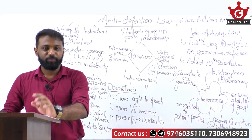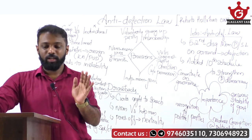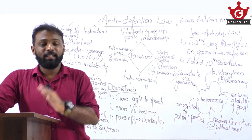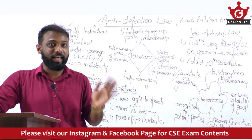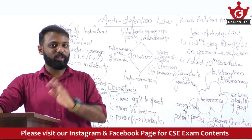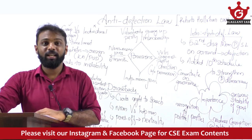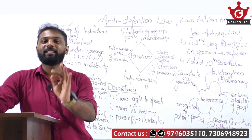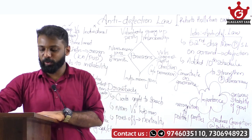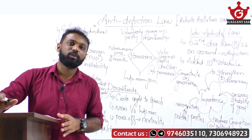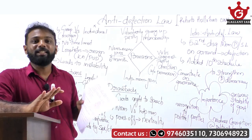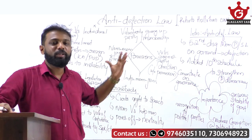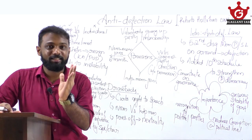When you come across a question, first thoroughly understand the demand of the question. The question is regarding anti-defection law, so in the introduction part we must write what it is. We must write the aim or objectives or importance of anti-defection law, and since it is a 250-mark question, we must write some of the provisions. The second part asks to point out drawbacks and suggest measures to prevent horse trading. Once you are able to decode the question, you can make a perfect answer.